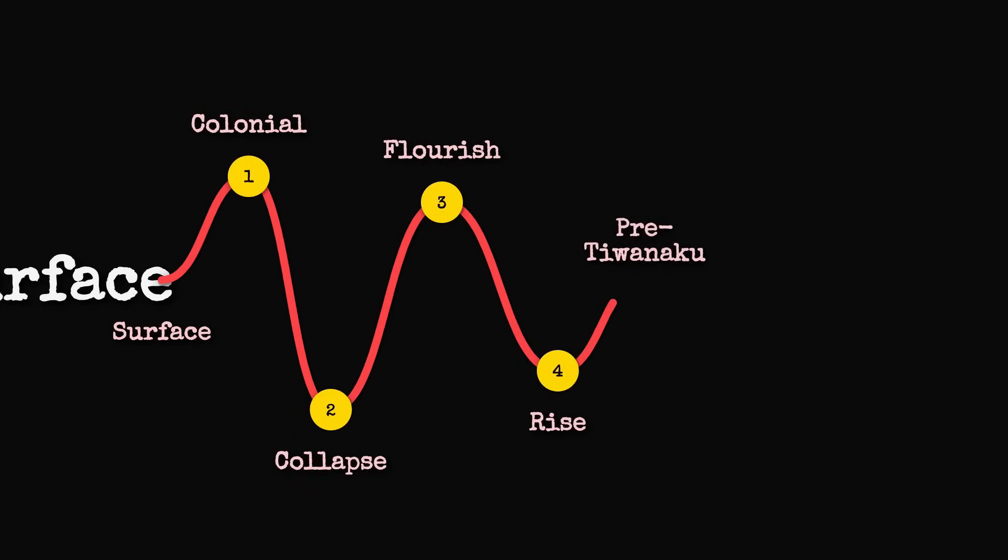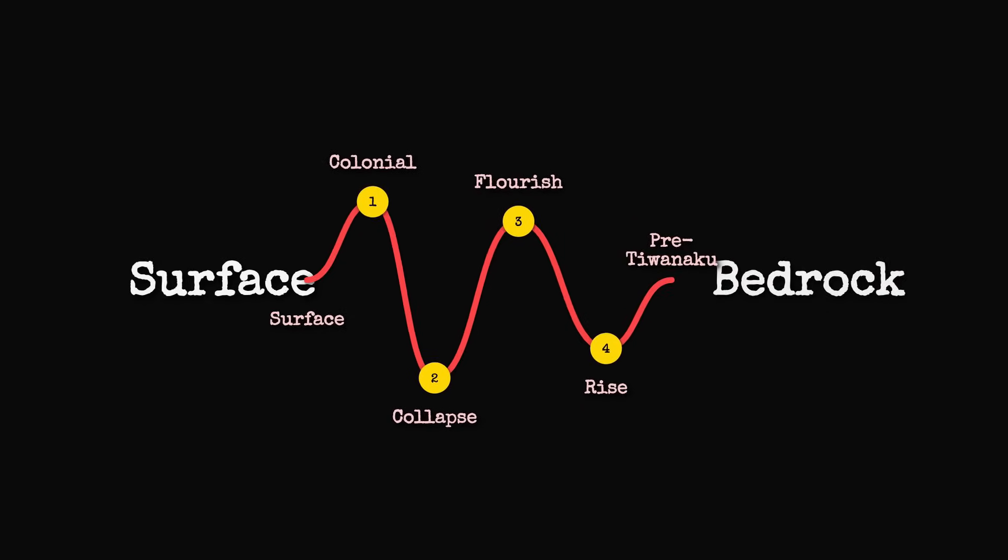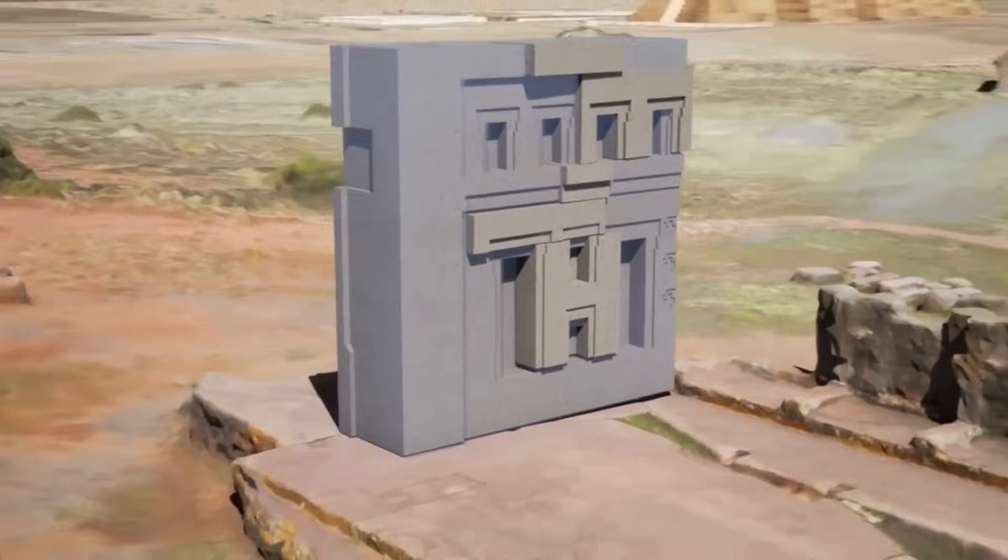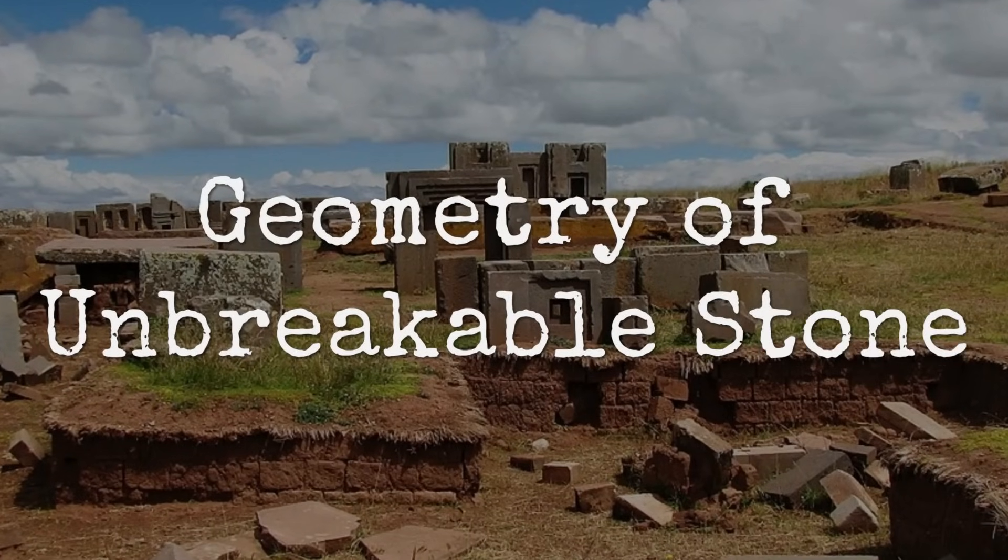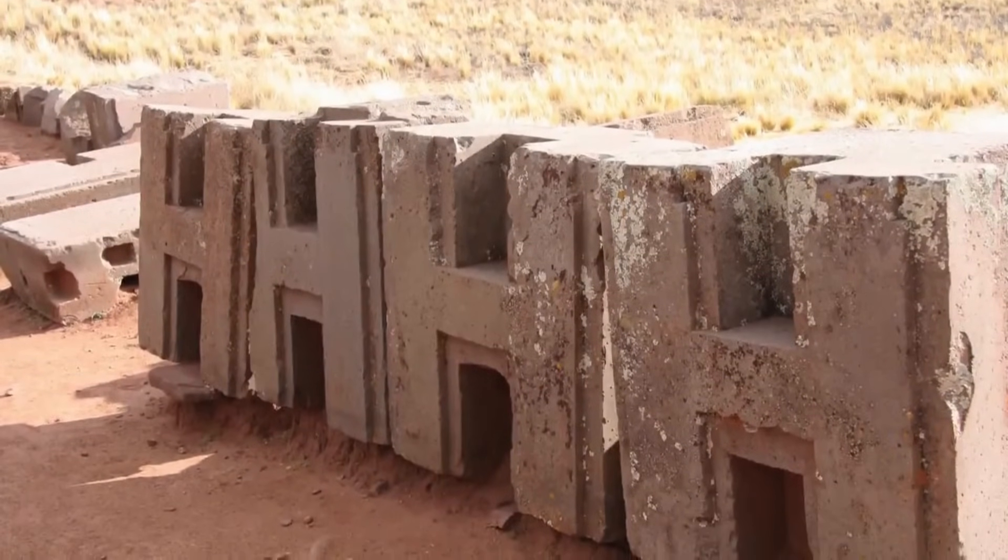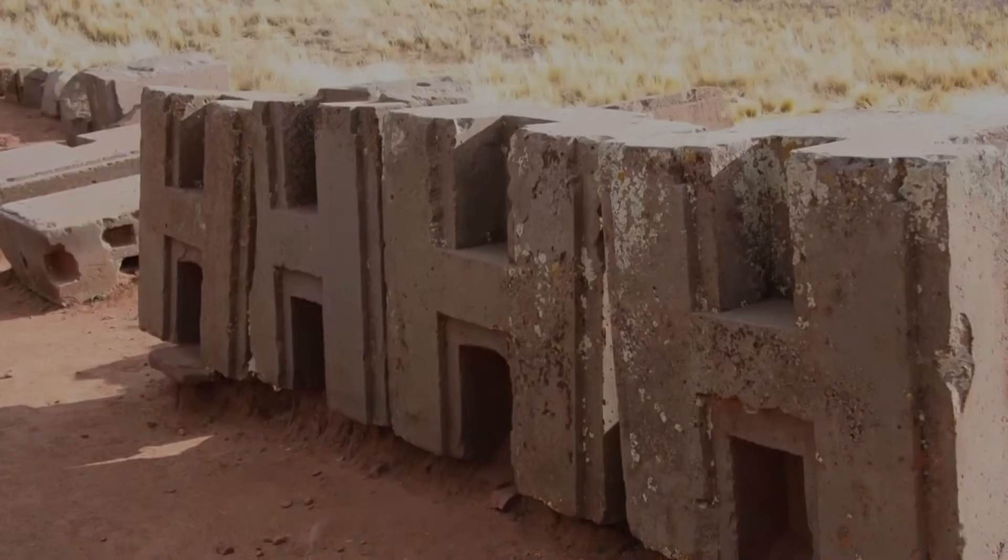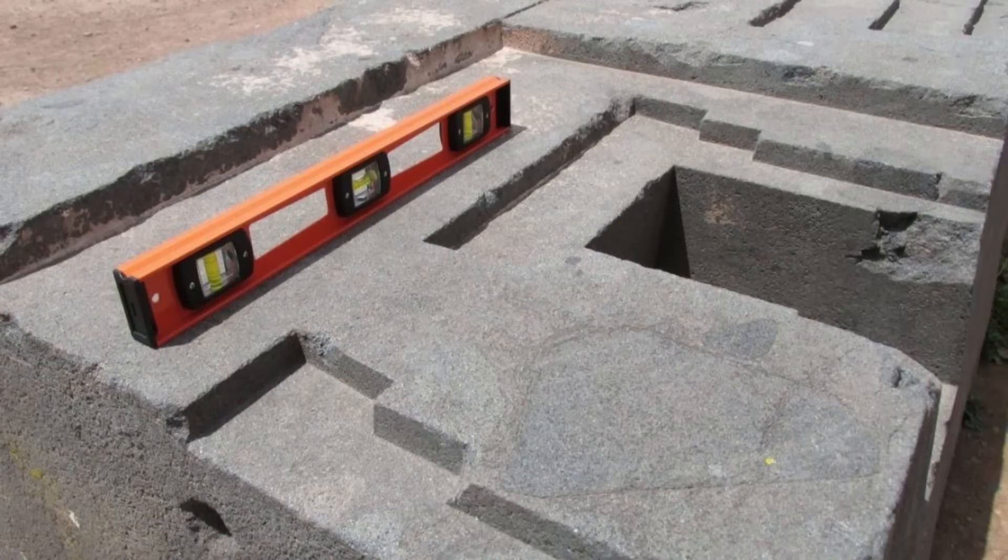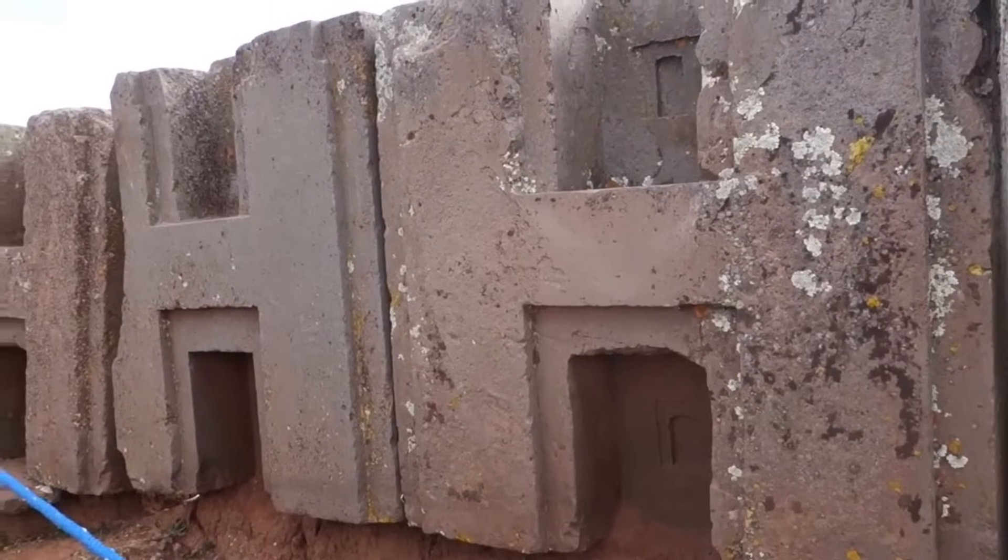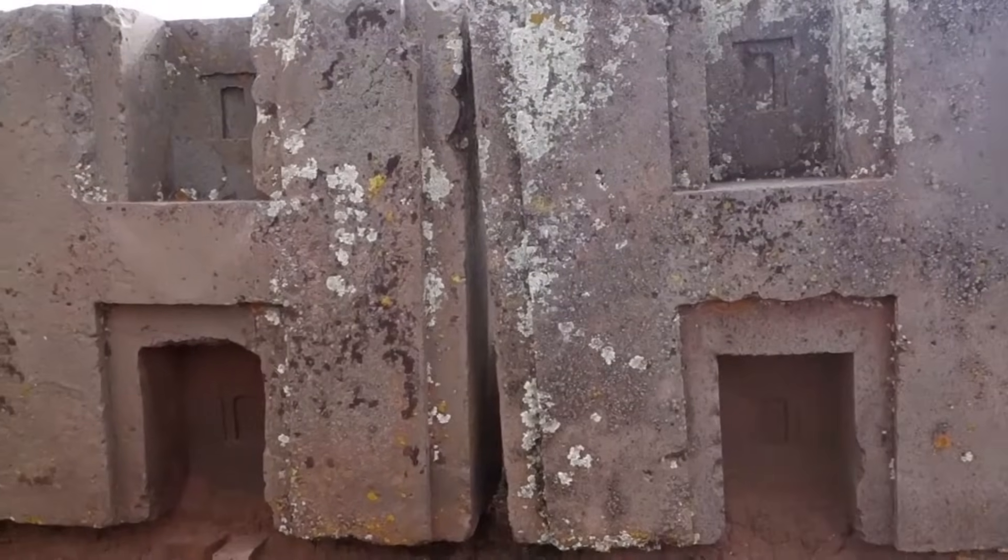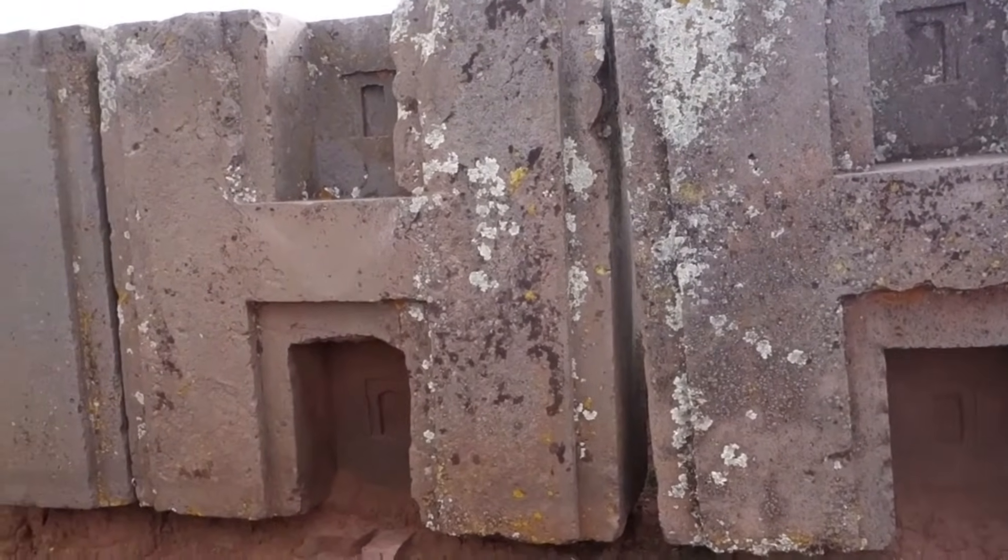Each new radiocarbon result, each stratigraphic layer, draws us closer to understanding the world in which these extraordinary stones were first set in place. The physical logic of Puma Punku's construction begins with the stones themselves. The H-blocks, carved from dense andesite, are not simply decorative—they are structural, engineered to lock together in three dimensions. Each block features a series of notches, grooves, and projecting lugs, allowing them to interlock like pieces of a puzzle. This modular approach is repeated across the site, producing stable walls and platforms that resist both gravity and seismic shocks.